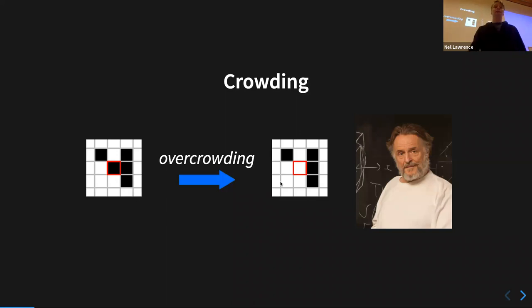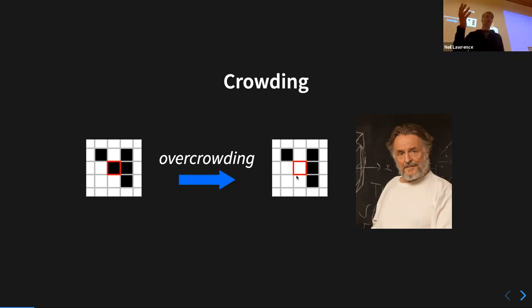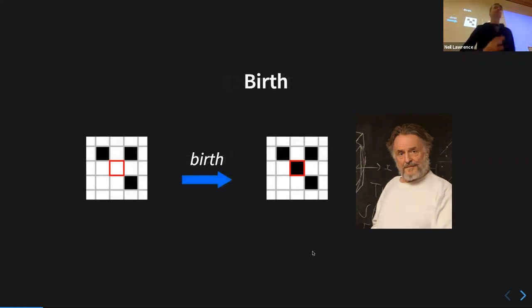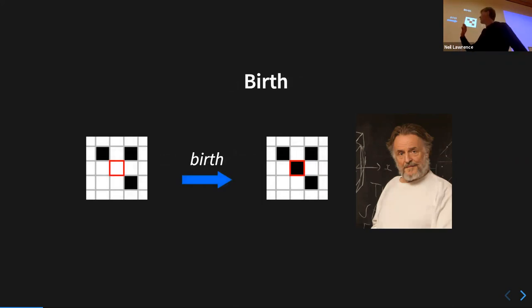The next rule is that if a pixel is surrounded by four or more living pixels in a given turn, it also dies through overcrowding. That central pixel dies because it's surrounded by four pixels. And then finally there's a happier rule - birth - which is: if you're surrounded by exactly three pixels and you're dead, then you're born in the next round.